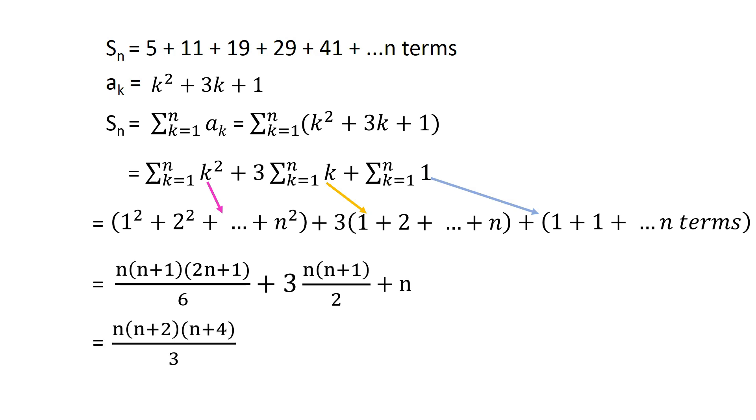Simplifying it further, we get sn equals n times n plus 2 times n plus 4 divided by 3, which is the required result.